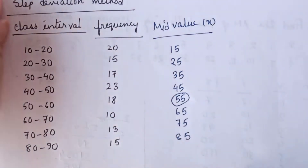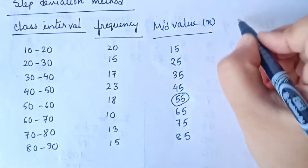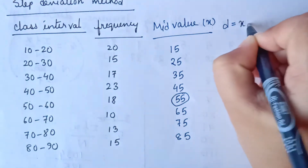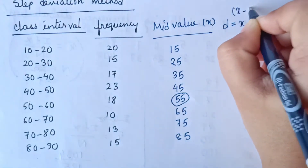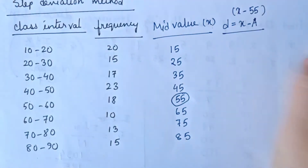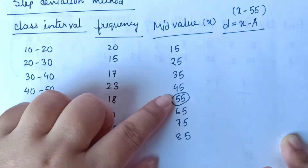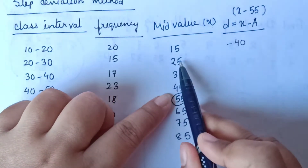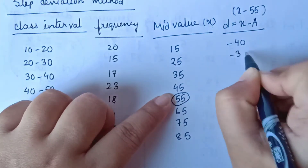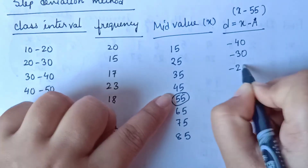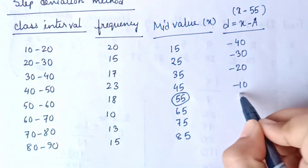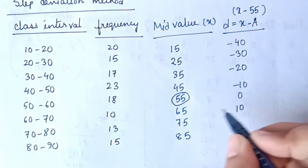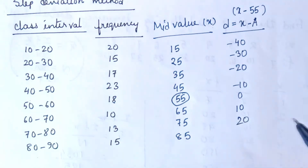The next column will be D, which is equal to x minus A, where A is equal to 55. So: 15 minus 55 equals minus 40, 25 minus 55 equals minus 30, 35 minus 55 equals minus 20, 45 minus 55 equals minus 10, 55 minus 55 equals 0, 65 minus 55 equals 10, 75 minus 55 equals 20, 85 minus 55 equals 30.